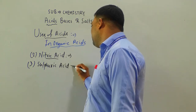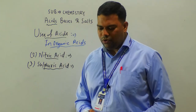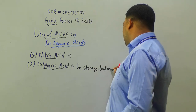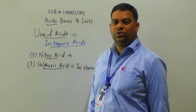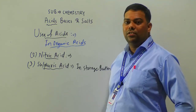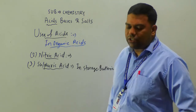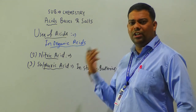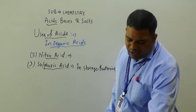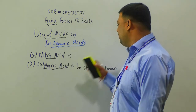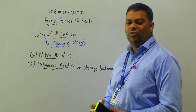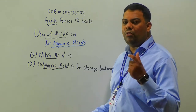Sulfuric acid is used in storage batteries — car batteries and large vehicle batteries. It is an important laboratory reagent and is used in the manufacturing of fertilizers, paints, detergent soaps, and artificial silk. HCl, HNO₃, and H₂SO₄ are commercially important reagents.